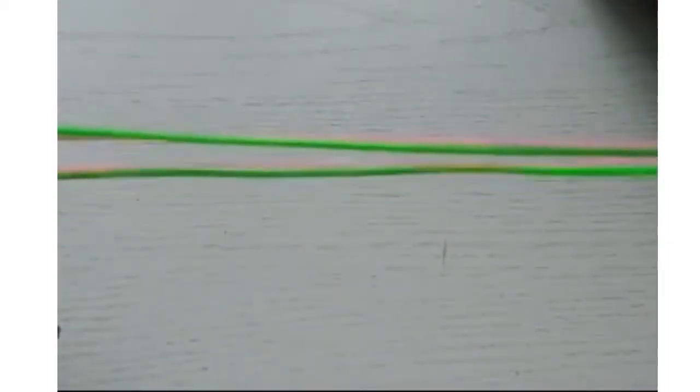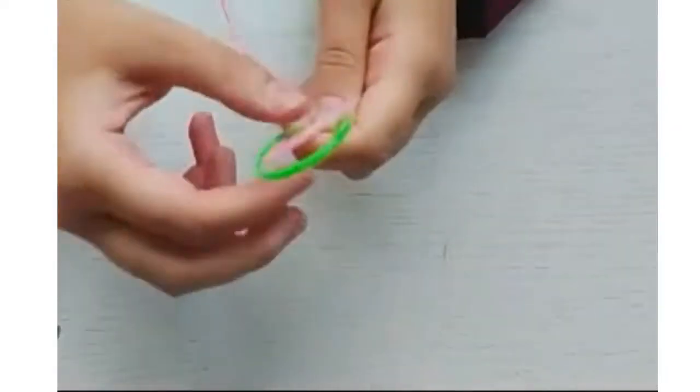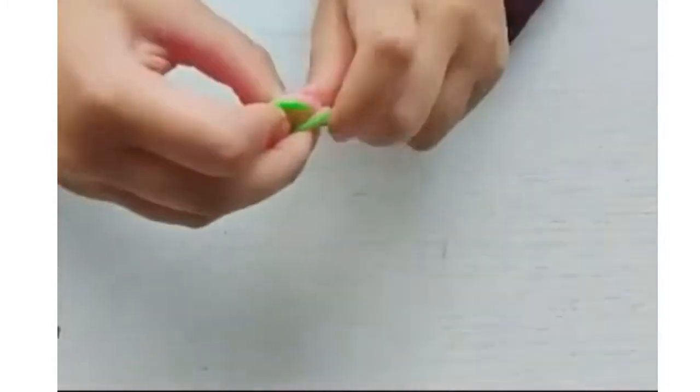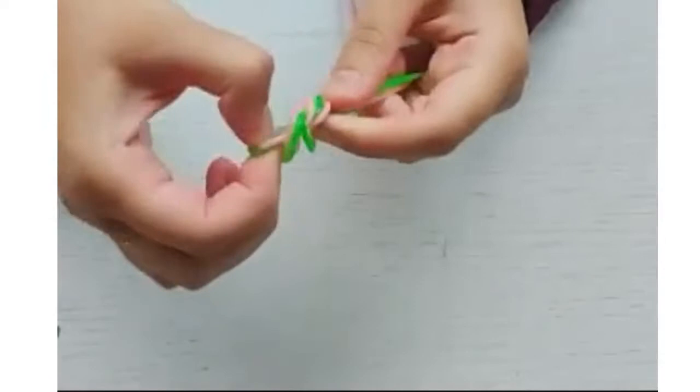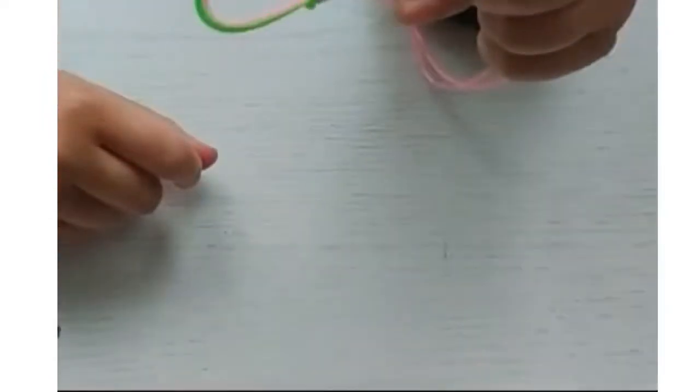Grab the top part of the Scooby and make an arch. Tie a knot at the top of the Scooby. It should look like this. If it doesn't, then rewind the video and go through the instructions.